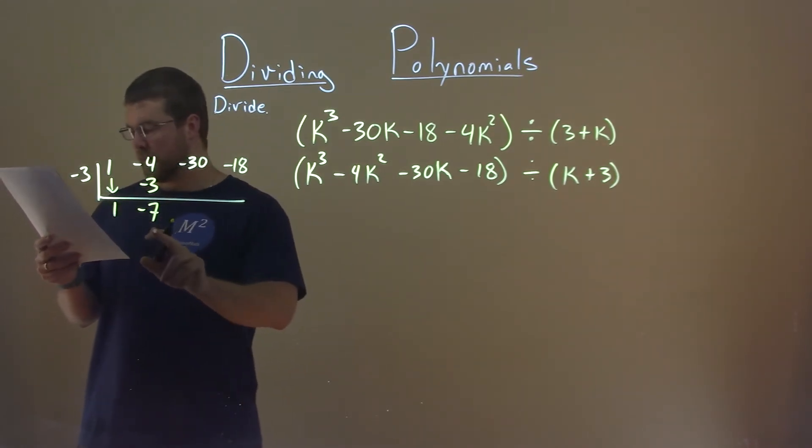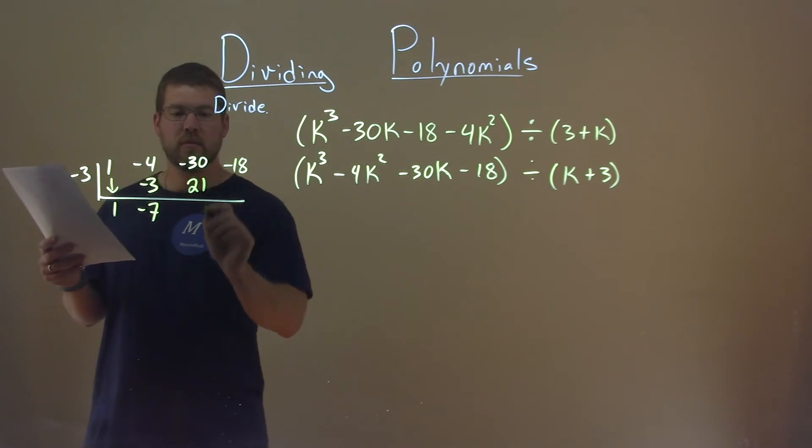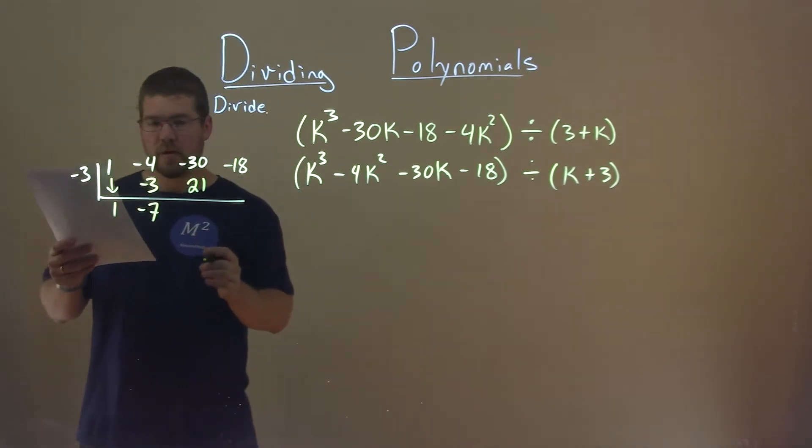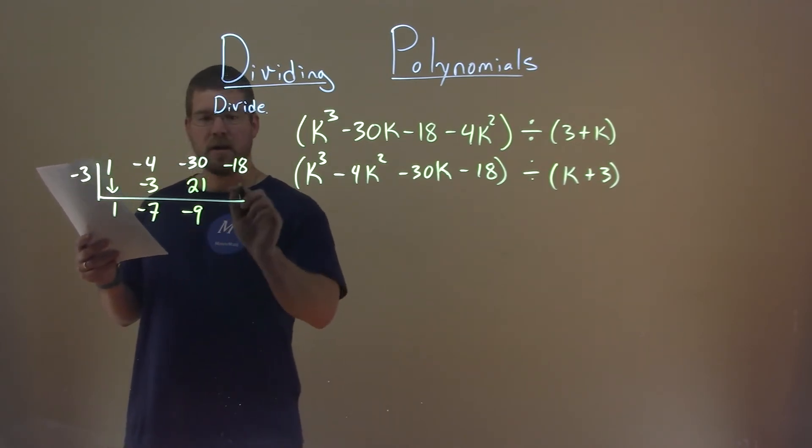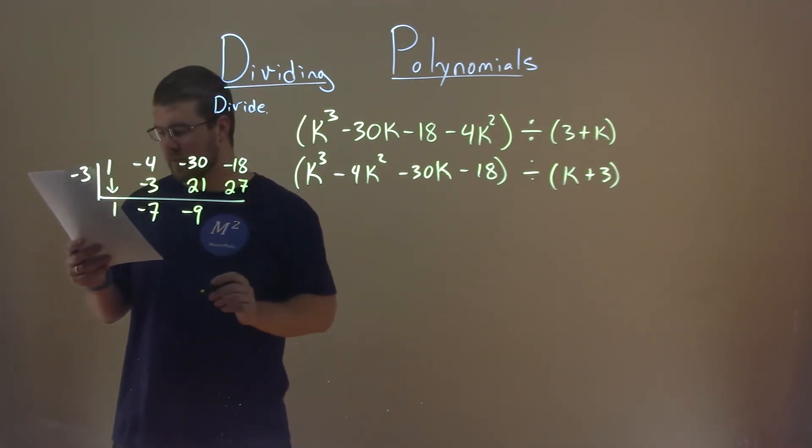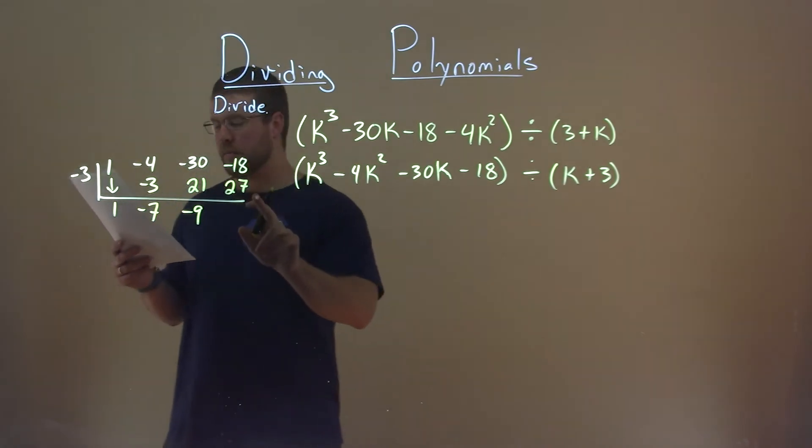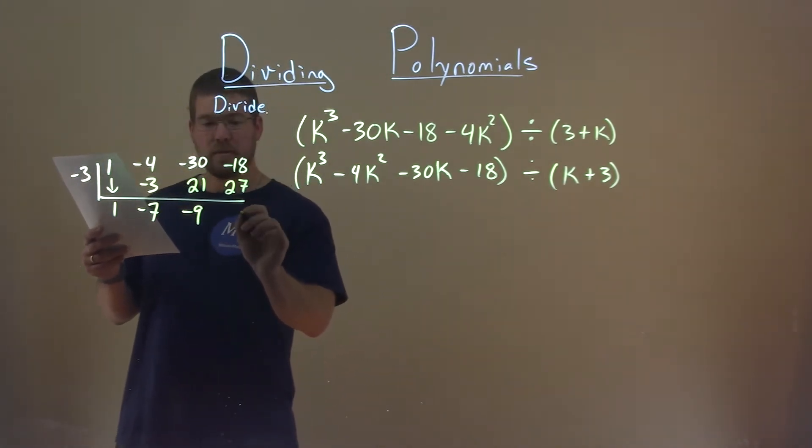Negative 3 times a negative 7 is a positive 21. Negative 30 plus 21 is a negative 9. Negative 3 times a negative 9 is a positive 27.